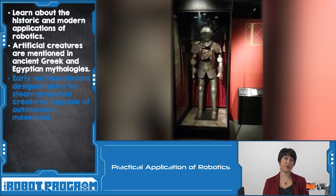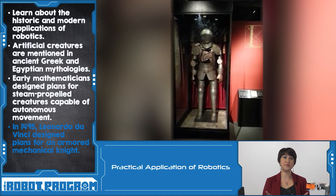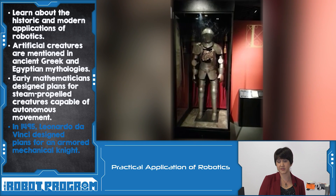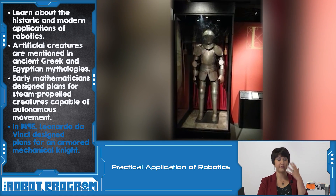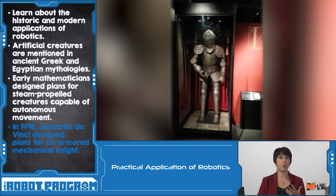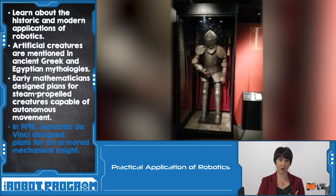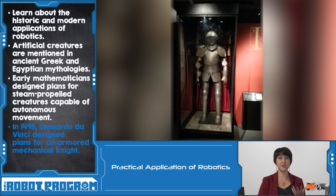Another example, in 1495, was Leonardo da Vinci's plans for a mechanical humanoid robot. He had a design for a knight in full armor that could sit up, wave, move its head, and move its jaw. It's not known whether or not he actually tried to build this robot, but his designs were found later on.